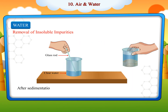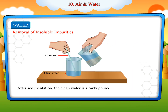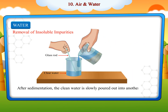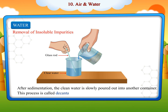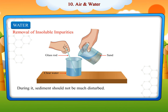After sedimentation, the clean water is slowly poured out into another container. This process is called decantation. During decantation, the sediment should not be much disturbed.